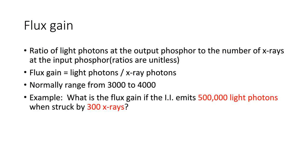Okay, now there is flux gain. Flux gain is determined by a ratio as well. It is the number of light photons produced over the number of x-rays which incident on the input phosphor. There will always be more light photons than x-rays. That is the entire concept of image intensification and brightness gain. Flux gain will usually be in the range of 3,000 to 4,000 times more.